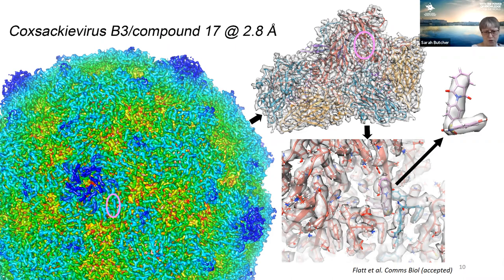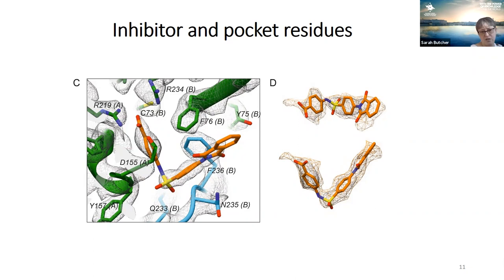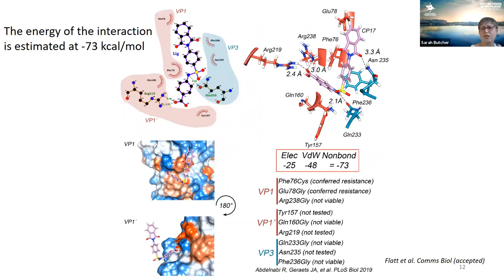We determined the structure of Coxsackievirus B3 in complex with compound 17 to about 2.8 Ångströms, with data collected at Diamond. It was possible to unambiguously resolve the small molecule within the electron density and determine its orientation. The binding pocket is not made from a single protein unlike the lipid-binding pocket — it's made from two copies of VP1 and one copy of VP3, sitting at the interface of the protomer. There are 60 protomers making up the capsid structure, and this compound sits at the interface between two.